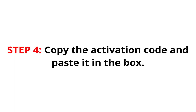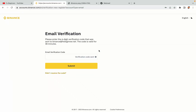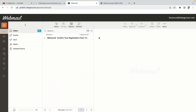Step 4: A confirmation code will be sent to your mail. Open your mail inbox, copy the code and paste it in the box to fully activate your Binance trading account.